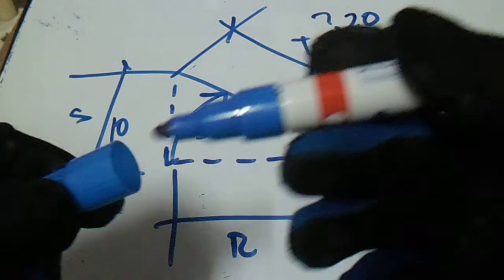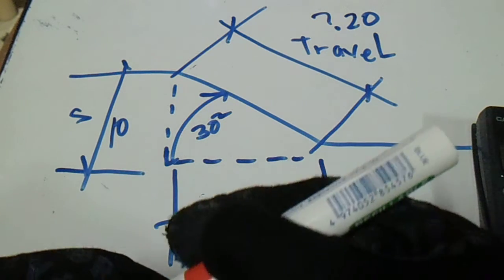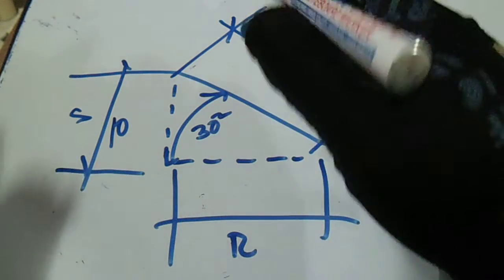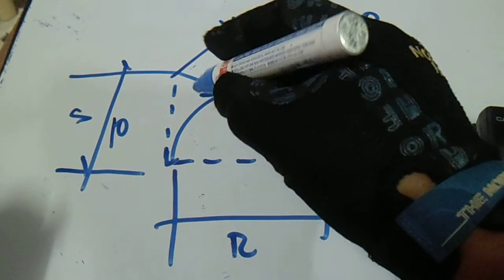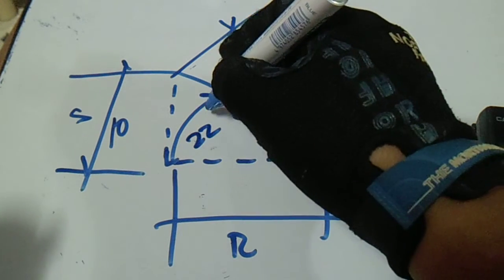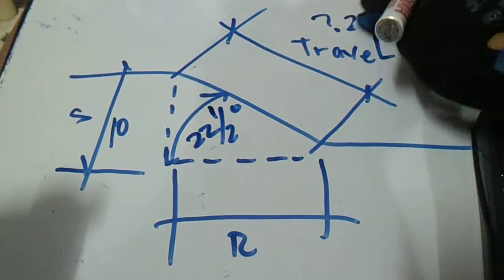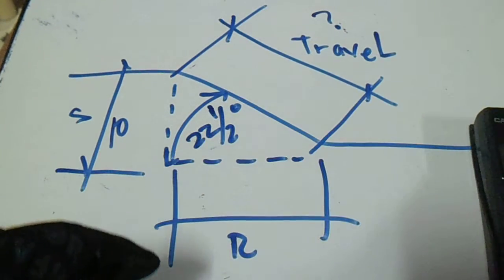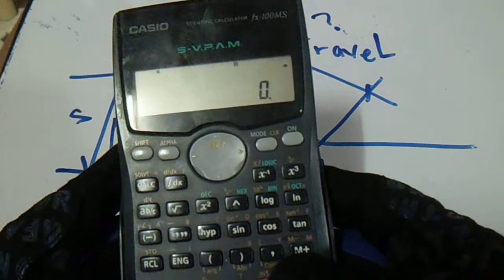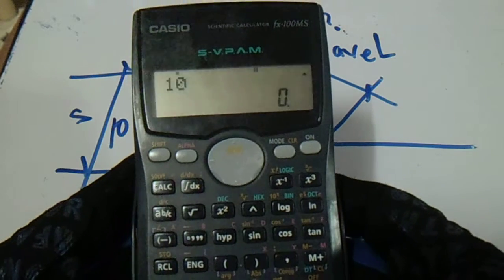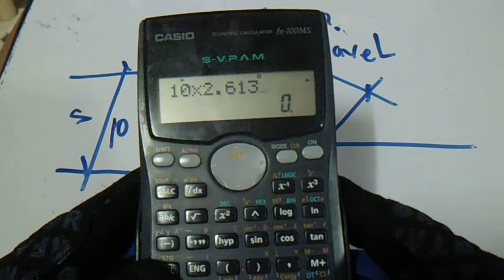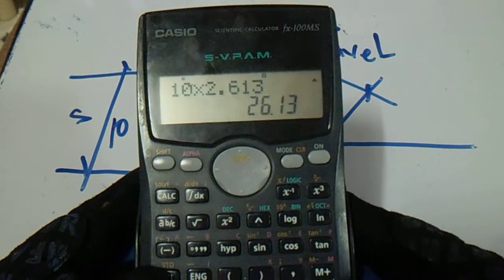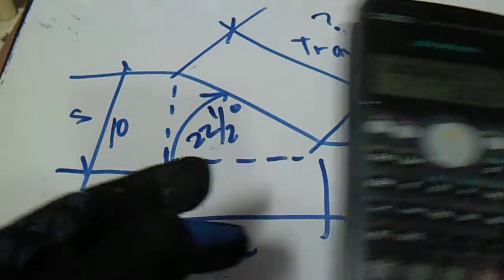That 2 comes from the cosecant of 30 degrees. Now if we change the degrees — let's say this is 22 and one half degrees — we will also get this travel. So multiply 10 by 2.613, and the answer is 26.13.